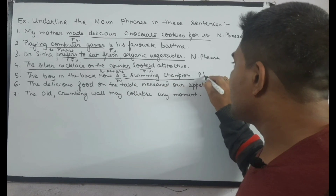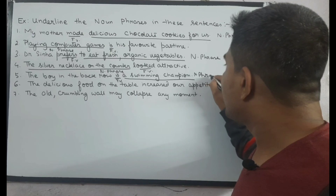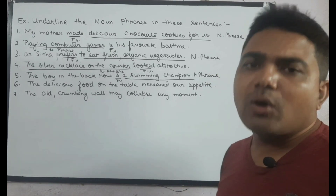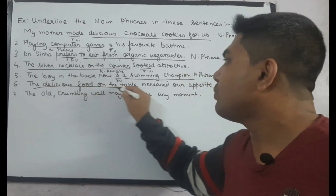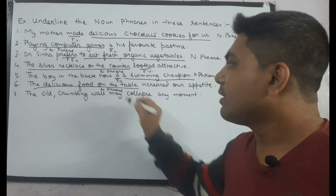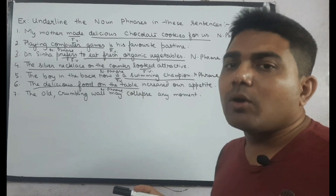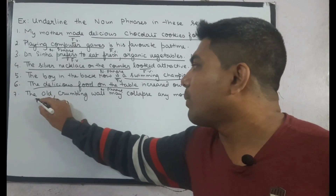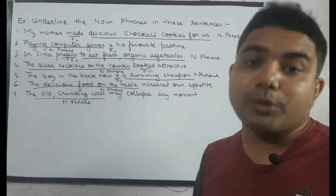Sentence five: 'The delicious food on the table increased our appetite.' What increased our appetite? The answer is 'the delicious food on the table,' so this is the noun phrase. Sentence six: 'The old crumbling wall may collapse any moment.' What may collapse any moment? 'The old crumbling wall' — so this is the noun phrase.